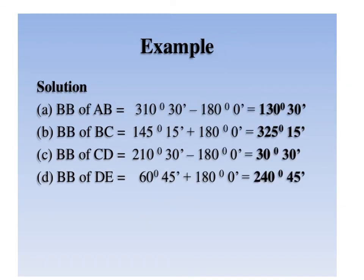This slide refers to conversion of back bearing to forward bearing. When the back bearings are known and we need to calculate forward bearing: in cases A and C, the value is greater than 180 degrees so we subtract 180 degrees to get the forward bearing. In cases B and D, the value is less than 180 degrees so we add 180 degrees.